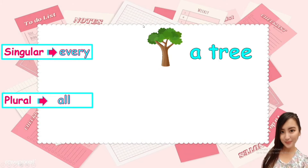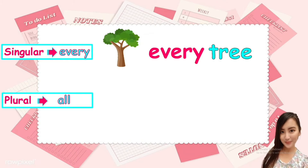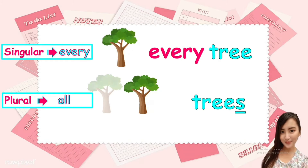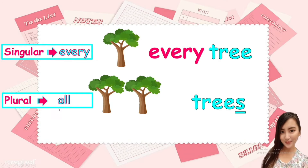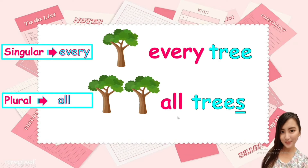Every peach. All peaches. So we are going to use every for a tree — every tree. Next, trees. There are two trees and this is plural because there's more than one, so we are going to use all. All trees. Every tree. All trees.